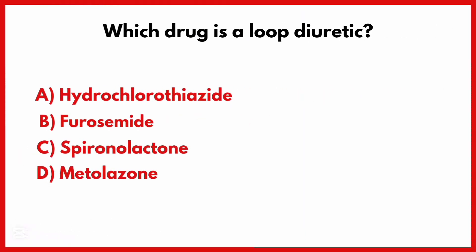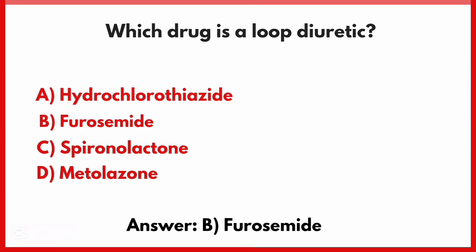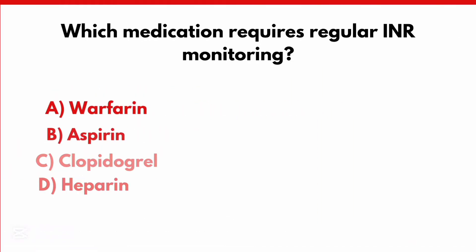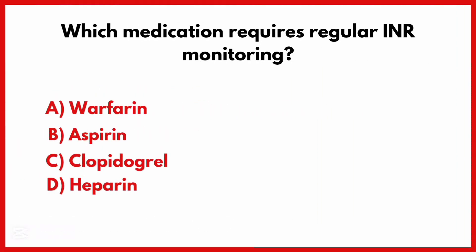Which drug is a loop diuretic? Correct answer is option B. Furosemide.